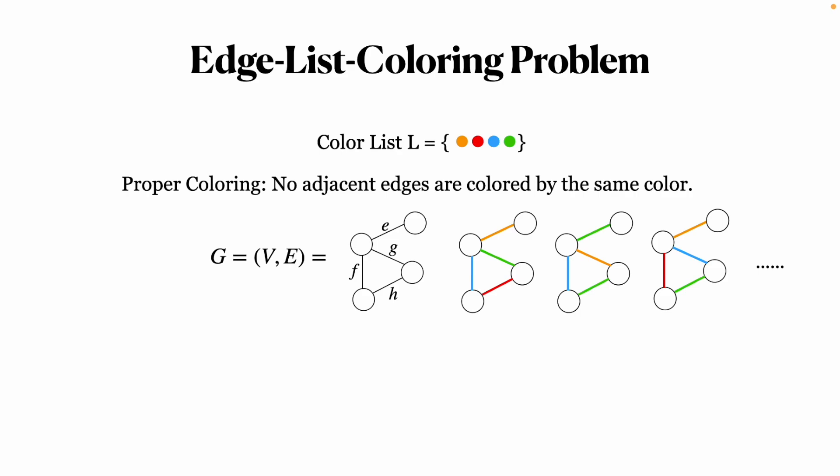Here are some examples of proper edge colorings. We can reframe this as a vertex coloring problem on the line graph of G.